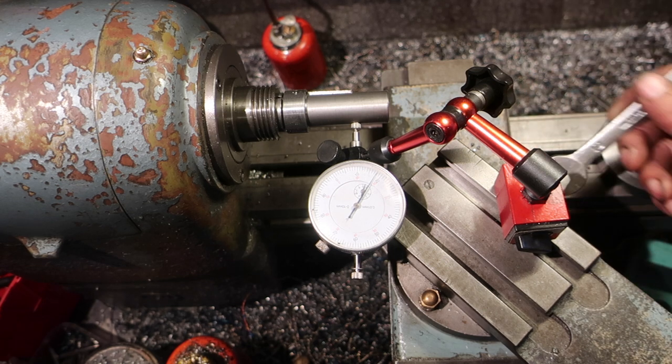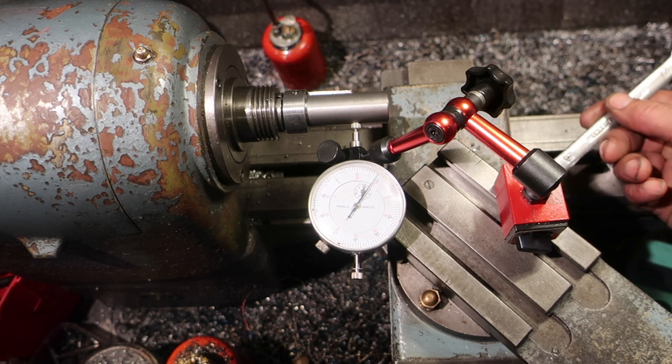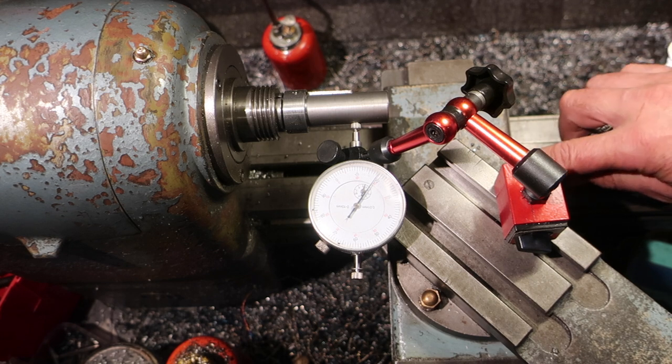I'd say that is pretty much bang on the angle that we want. So tighten up the other side. And that is our infeed angle for cutting the outside angle of the gear.